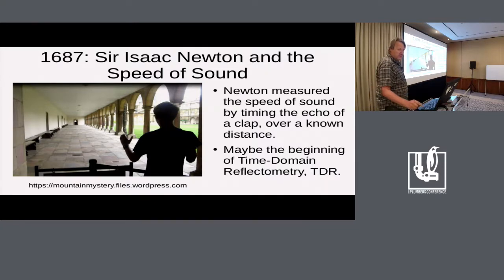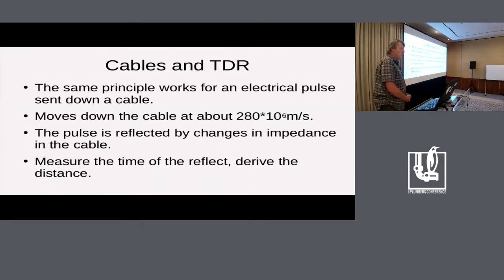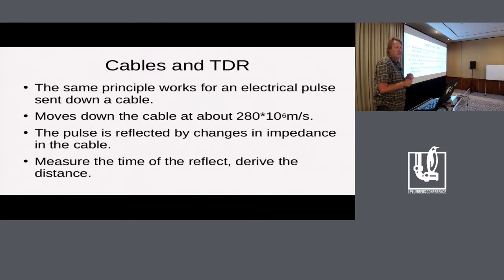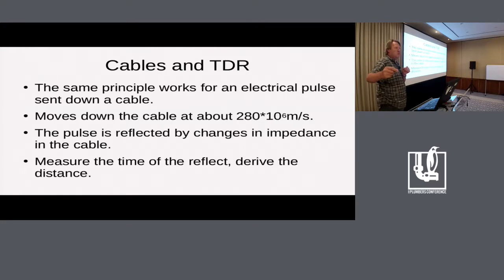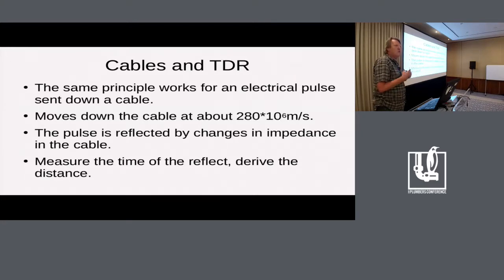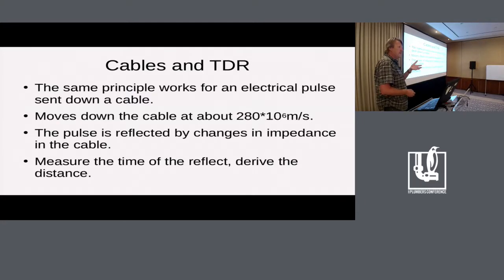If you look through the PHY data sheets, they always talk about TDR. The same thing works for cables: you send a pulse down it, it hits something at the far end, and it bounces back. But instead of being a nice slow pulse you can hear, it's 280 megameters per second, so it's quite fast. It gets reflected when there's a change in impedance — that could be the end of the cable going from 50 ohm to a million ohm disconnected, or it could be looped back because the cable is shorted. By measuring the time and knowing the speed, you can work out roughly how far along the cable it is broken or starting to degrade.